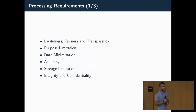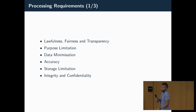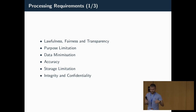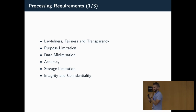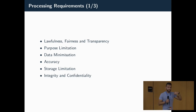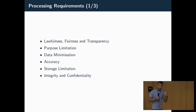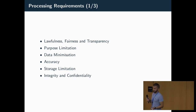Article 5 provides the principles behind lawful processing of personal data. It states that personal data must be processed in a lawful, fair, and transparent way. The principle of purpose limitation asks that personal data are processed for specific and legitimate purposes and not further processed for additional purposes incompatible with the original purposes. The data minimization principle tells us we should collect the minimum amount of personal data needed for a particular purpose and should not collect additional personal information if it is not needed.